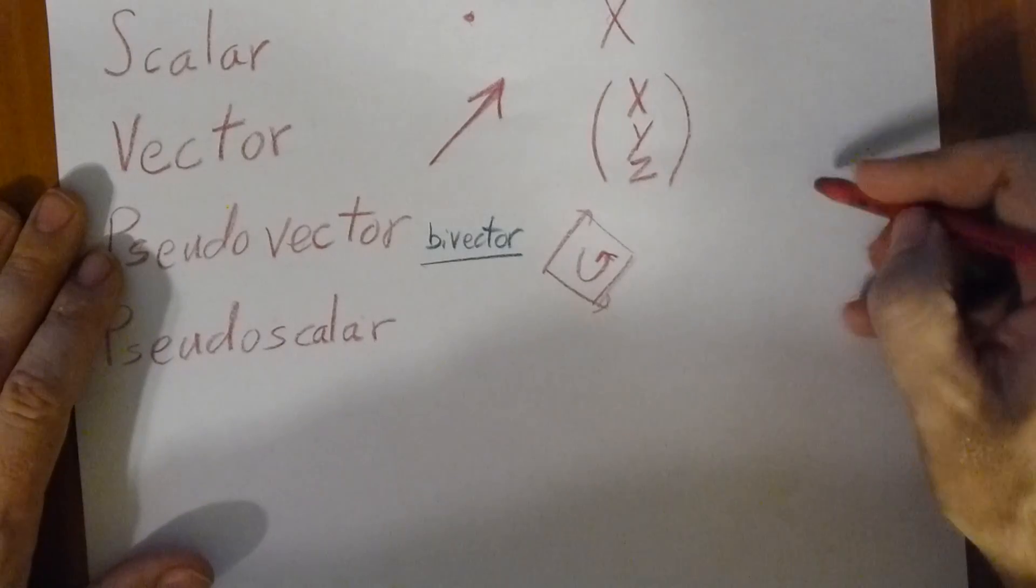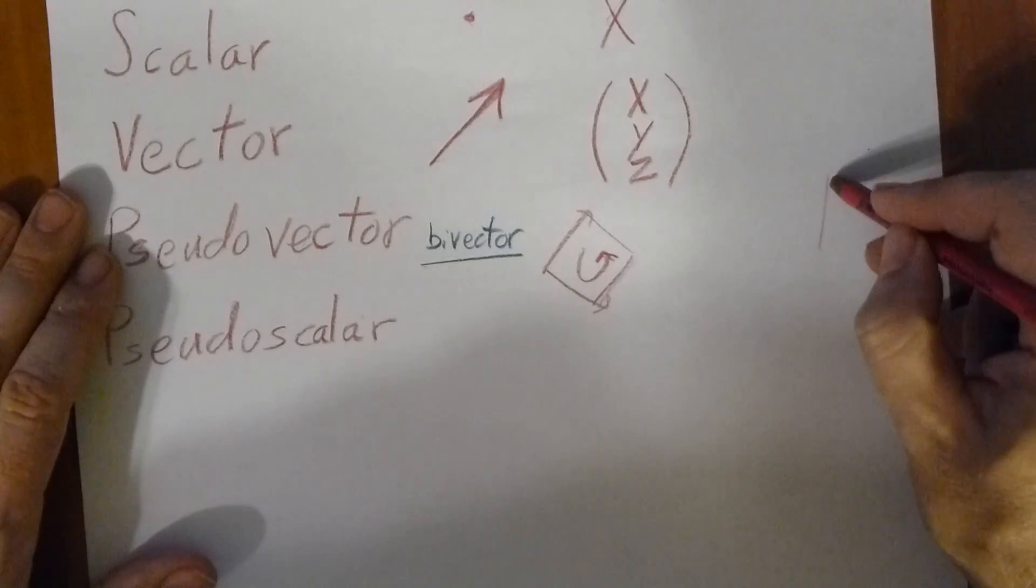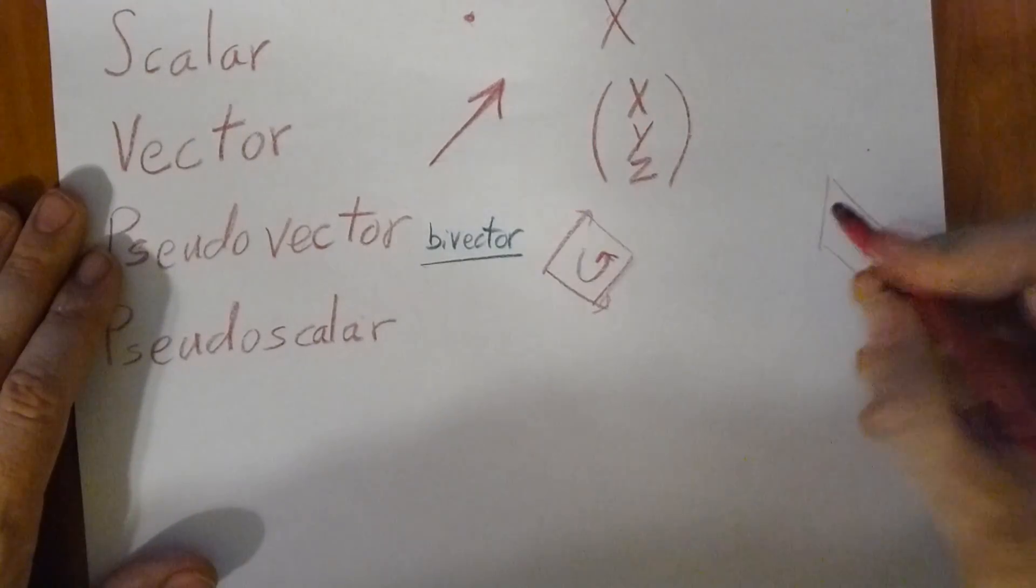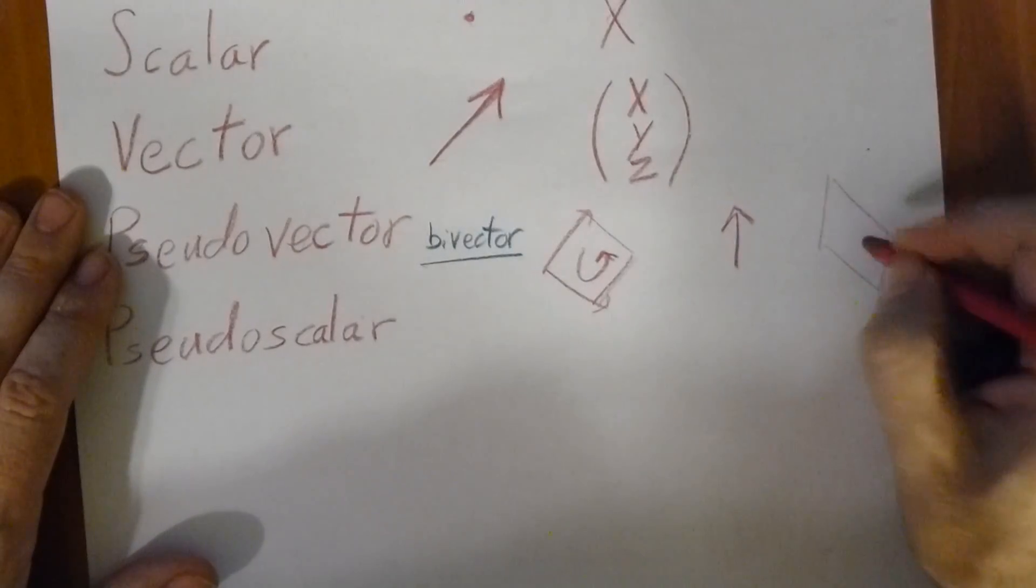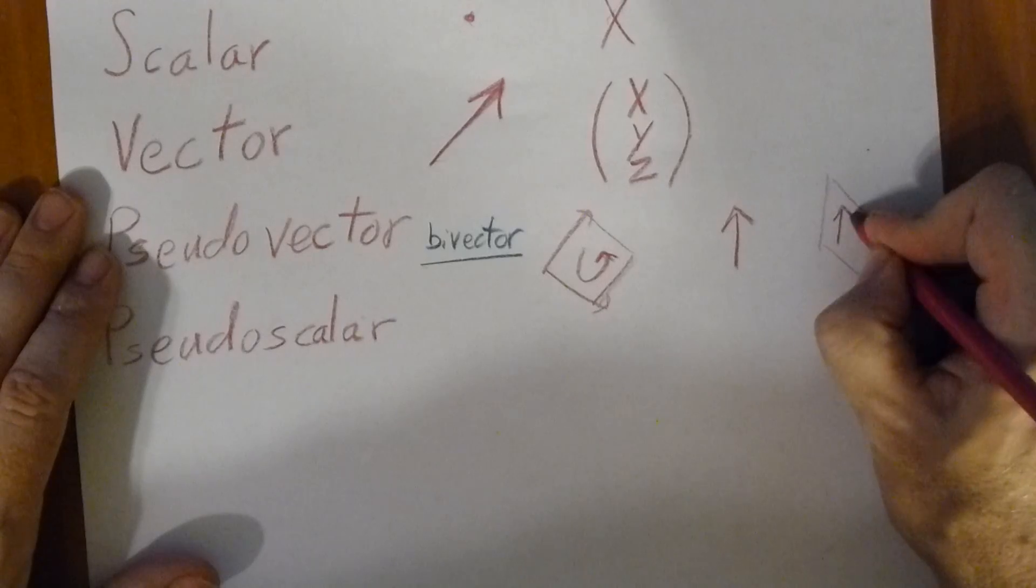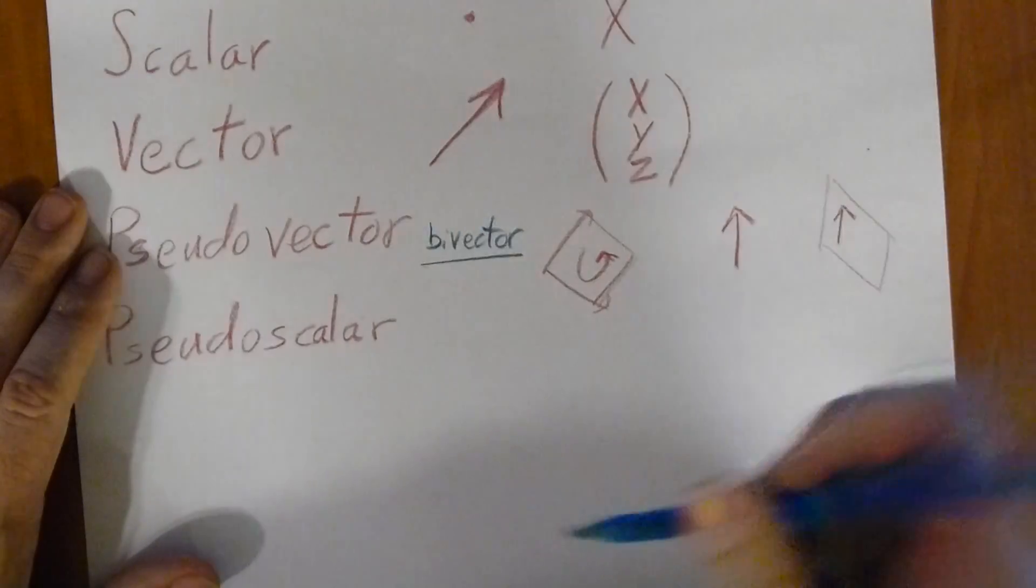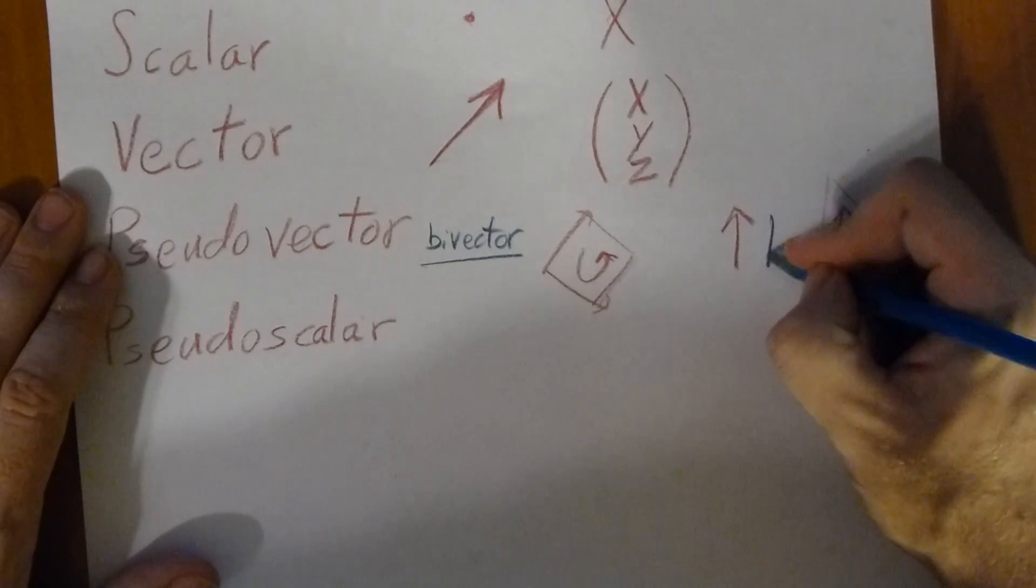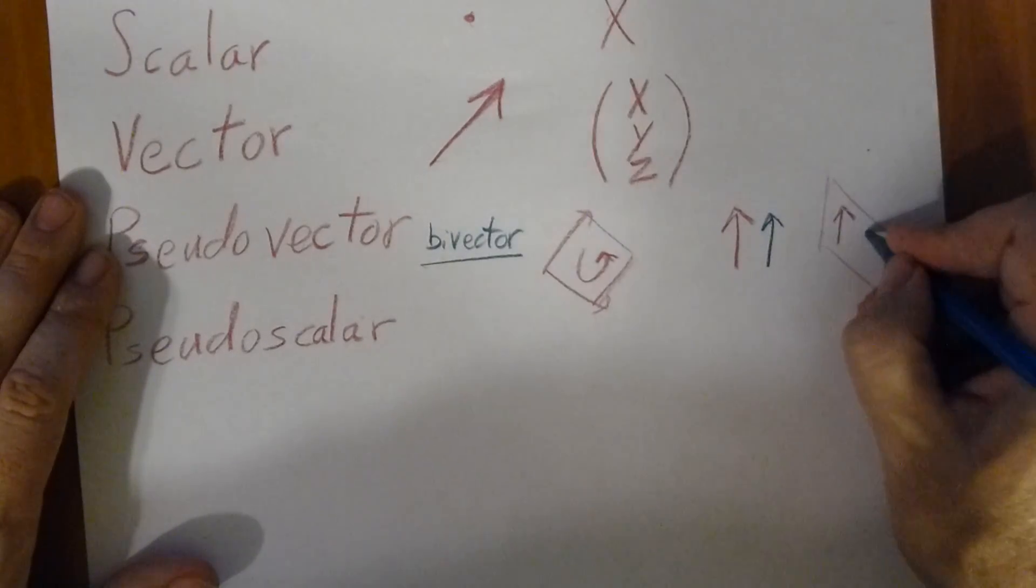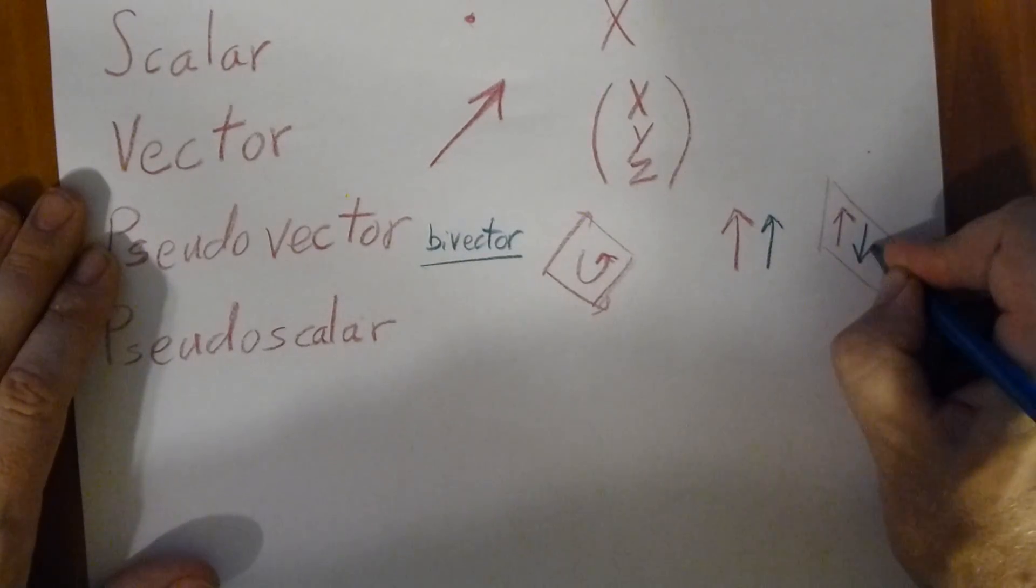If you have a mirror—I'm gonna draw a little mirror right here—and you have a vector, you look in the mirror, you're going to see a vector. But pseudovectors are like vampires or something. You look at a pseudovector in the mirror and it points the opposite direction.